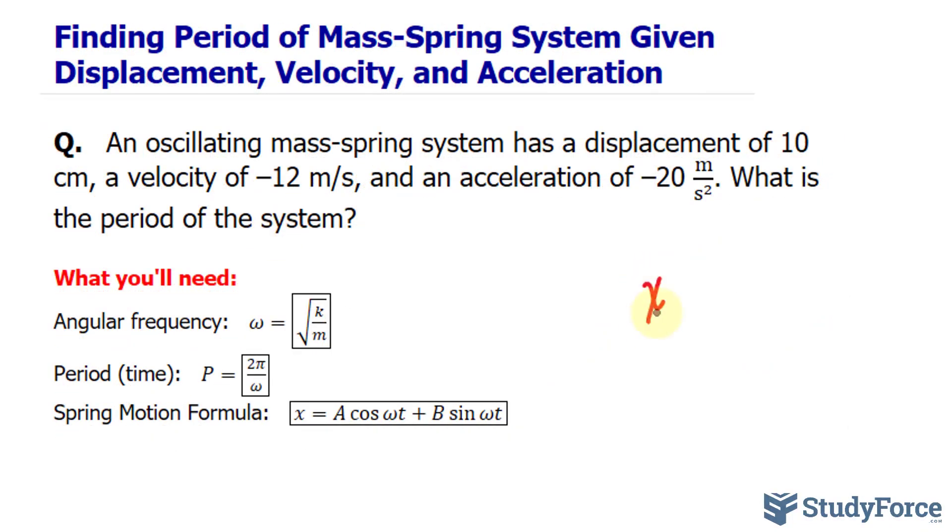I have x is equal to A for the amplitude, cosine omega t. t represents the time, and omega, this Greek letter, represents the angular frequency. We are also told that the velocity at this displacement is negative 12 meters per second.